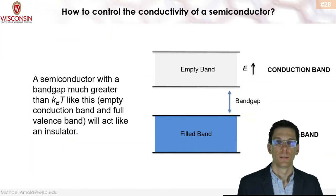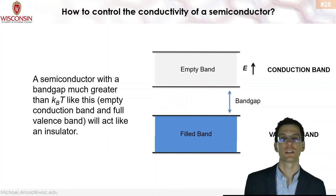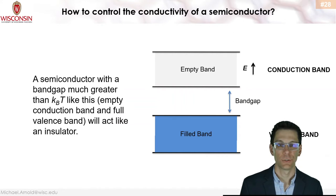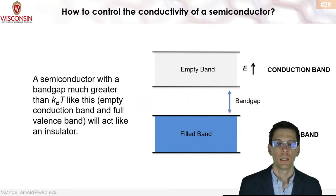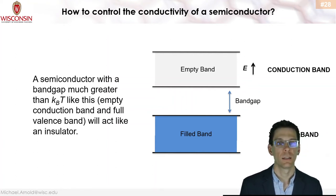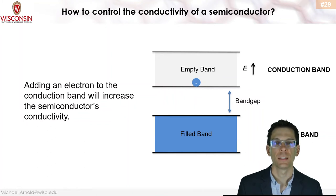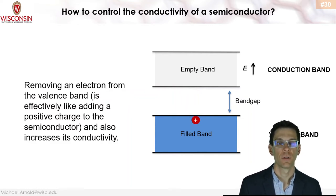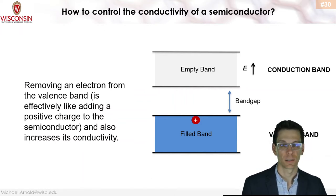Now, how do we control the conductivity of a semiconductor? A semiconductor with a band gap much larger than kT will have an empty conduction band and full valence band, acting like an insulator — no holes in the valence band and no electrons in the conduction band. Adding an electron to the conduction band increases conductivity. Likewise, removing an electron from the valence band leaves a positive charge — a hole — which also increases conductivity.